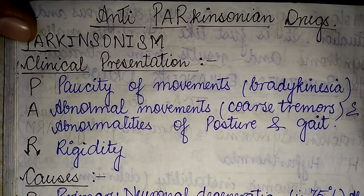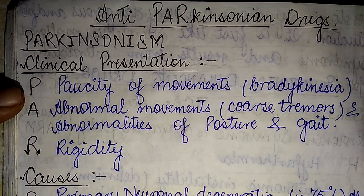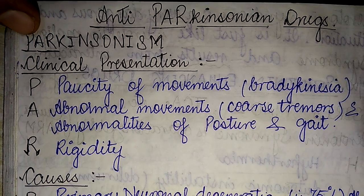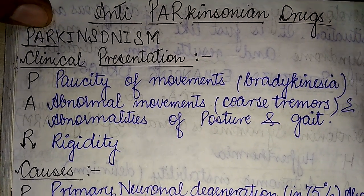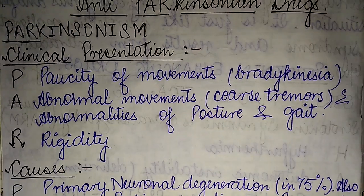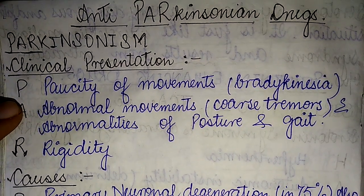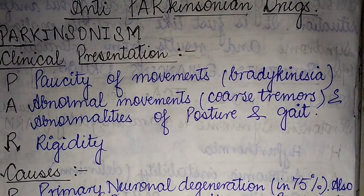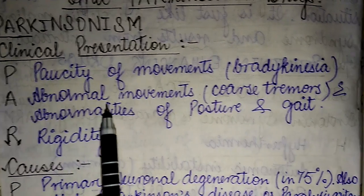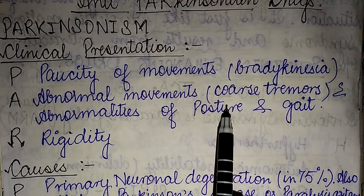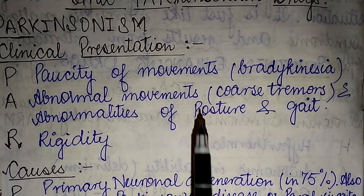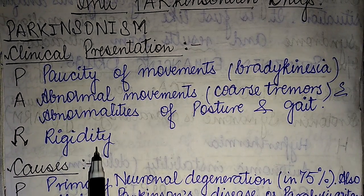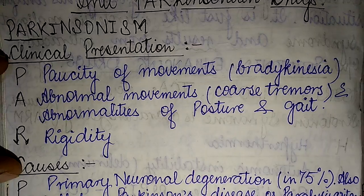I have simplified the features of Parkinson's using the first three letters — P, A, and R. Looking at the clinical presentations: P stands for paucity of movements, medically called bradykinesia; A stands for abnormal movements, that is coarse tremors and abnormalities of posture and gait; and R stands for rigidity.